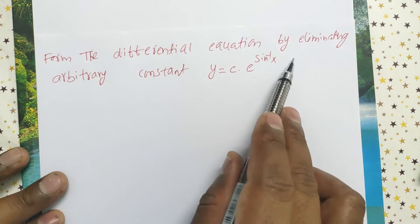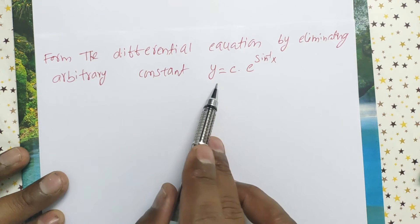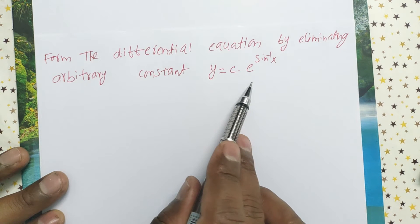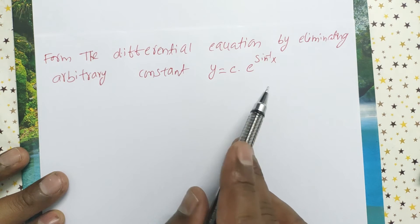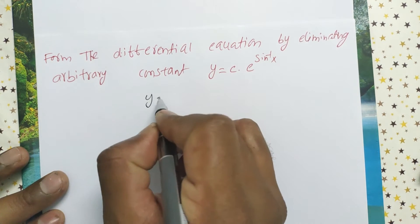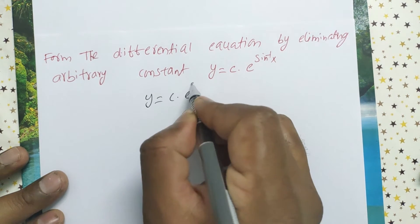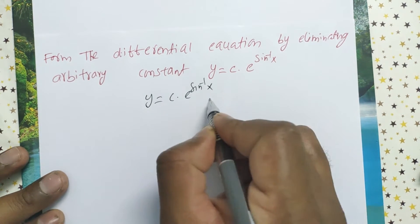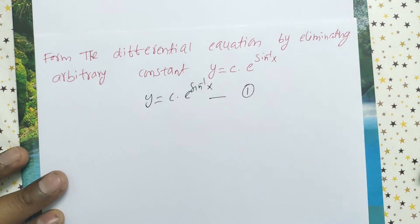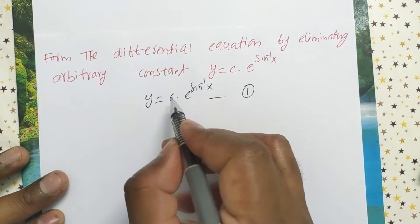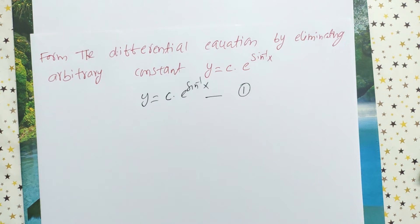Form the differential equation by eliminating arbitrary constant: y equals c times e to the power sine inverse x. Take the given equation y equals c times e to the power sine inverse x. Take this as equation 1. Here how many constants are there? Only one constant, that is c. Now we have to eliminate c.